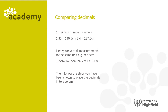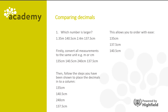Then follow the same steps to place the decimals into a column. This allows you to see the order with ease: 135 centimetres, 137.5 centimetres, 140.5 centimetres and 240 centimetres. The largest is 240 centimetres, but we need to remember to convert it back to its original form which is 2.4 metres — all we did there was divide by 100.